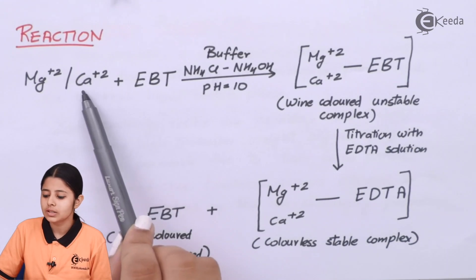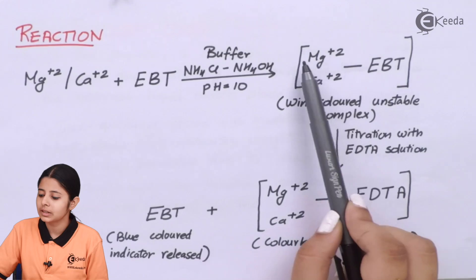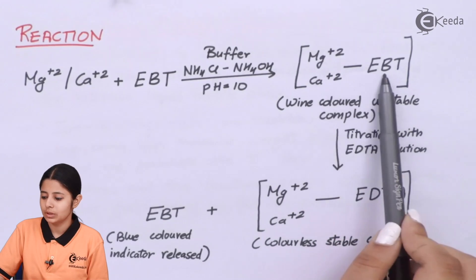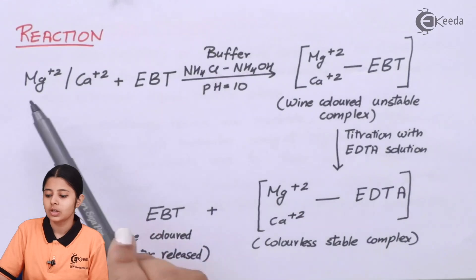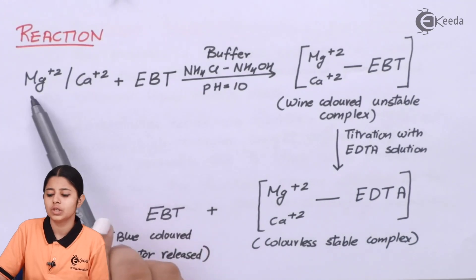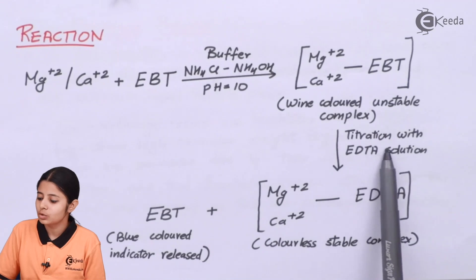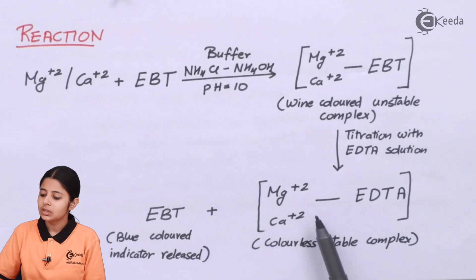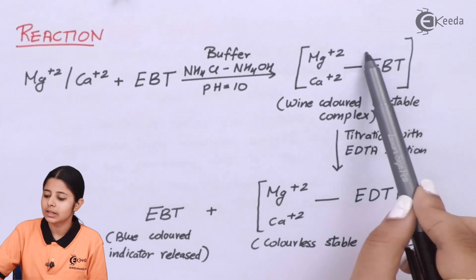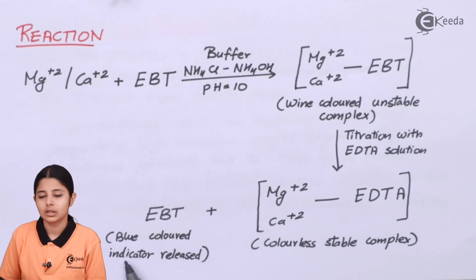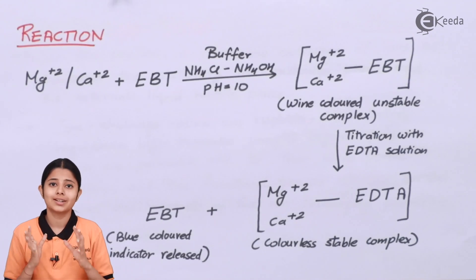The reaction: Mg2+ or Ca2+ plus EBT, with NH4Cl/NH4OH buffer at pH 10, forms Mg2+·EBT or Ca2+·EBT — a wine red colored unstable complex. In the first part, EBT (originally blue) reacts with Mg2+ and Ca2+ to form the wine red unstable product. When this is then titrated with EDTA solution, the Mg2+ and Ca2+ connect to EDTA forming a colorless stable complex, and the EBT is released — returning to its blue color.